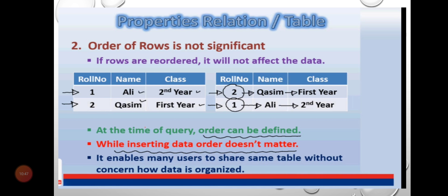Number two: The order of columns is insignificant. The order of the column or attribute in defining a relation table has no significance. The system inserts new columns at the end of existing columns. The system requires the data of columns by their names. If rows are reordered, it will not affect the data. At the same time, a query order can be defined while inserting data. Order doesn't matter. It enables many users to share the same table without concern for how data is organized.